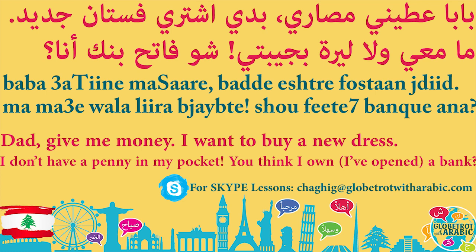Shoo faytih bank ana? Shoo means what. Faytih means I've opened — but it's not a verb here, we've used a participle. Faytih literally means opener or the person who opens, in the masculine form. In the feminine form it would be faytha. Since it's the dad talking about himself, he says faytih. Shoo faytih bank ana? — What, have I opened a bank? I? This is a way to say: you think I own a bank, you think I'm super rich? The dad is saying I really don't have money, stop asking me. You can use this expression in Lebanese Arabic when someone constantly asks you for money. If a woman says the sentence, she would say shoo faytha bank ana?